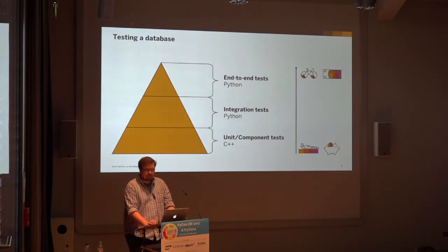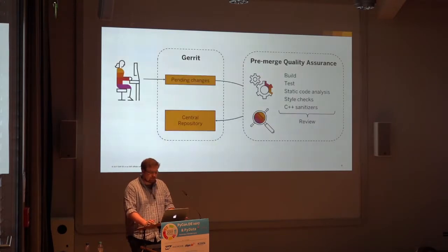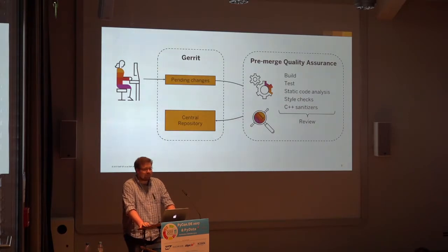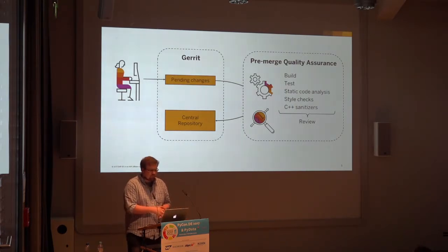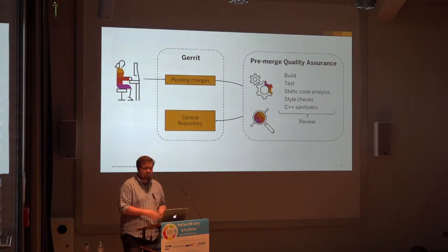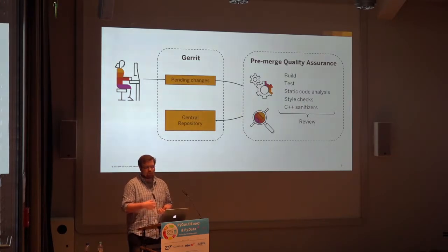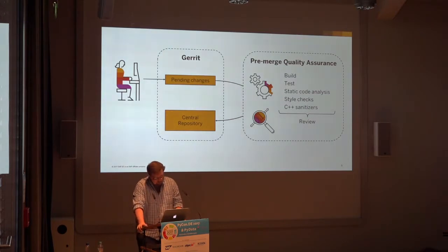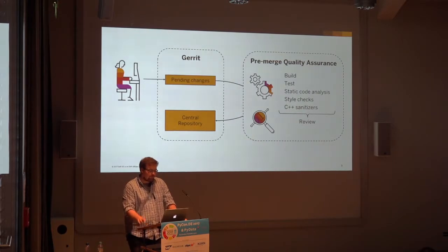We are talking about automated testing. Automation happens after the developer did something — in most cases, after the developer created a change with new modifications in the source code. Let's take a look at our developer workflow. A developer commits a change in our slightly big Git repository and pushes it to our central Gerrit instance. Gerrit is a quite popular code review system used by big open-source projects like Android and OpenStack.